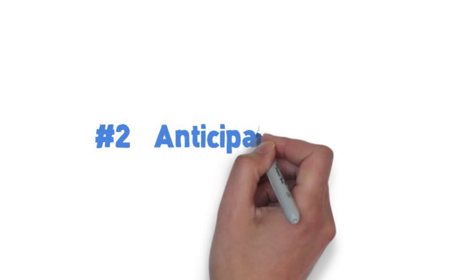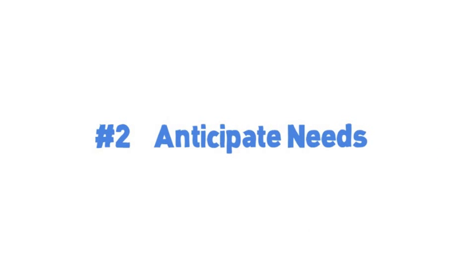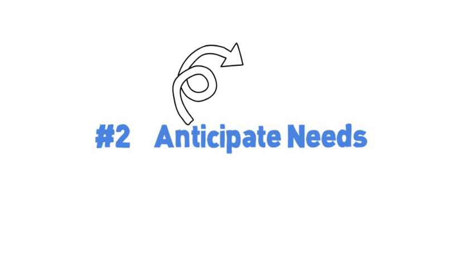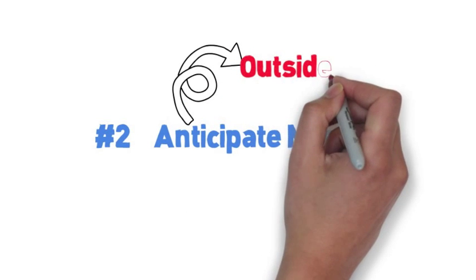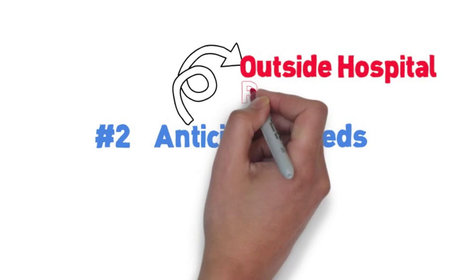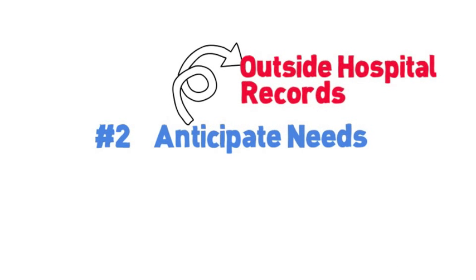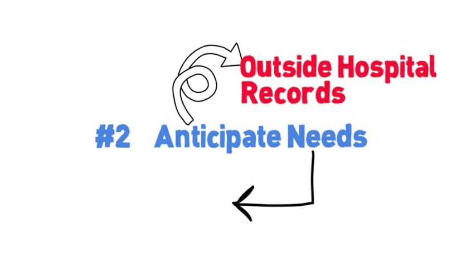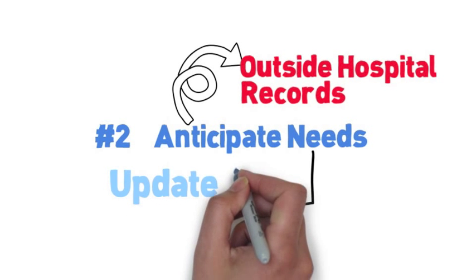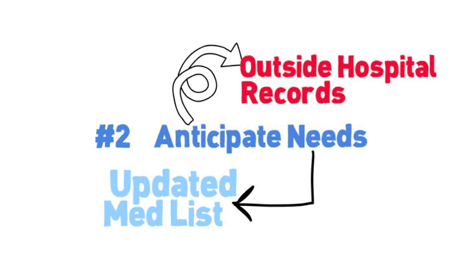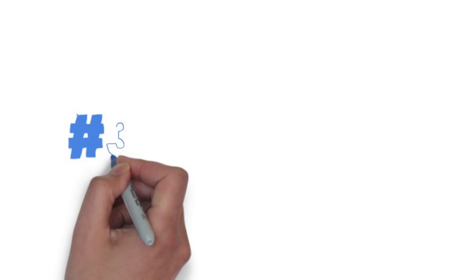Number two: anticipate the needs of your team — your residents and your attending. If you think hospital records are needed, go out and try to get those outside hospital records, or at least get consent for them. That way during rounds you already have a plan and they will really appreciate that. Also make sure you have an updated medication list on your patient, because it's really important that your team is working with the most up-to-date information.